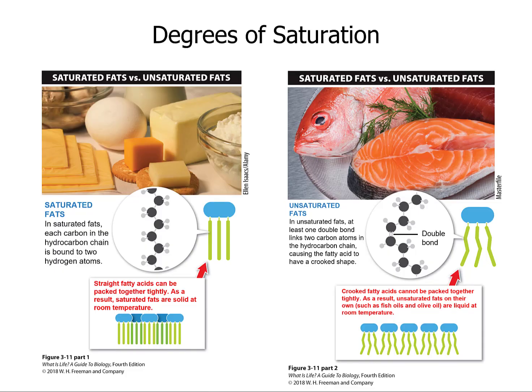Saturated fats are fully saturated and fit together really nicely — tightly packed. Because the straight fatty acids can be packed closely together, they're almost solid at room temperature. That's why butter or cheese is somewhat solid at room temperature — those are saturated fats. Unsaturated fats have at least one double bond that causes a kink; they don't stack as well and are liquid at room temperature.